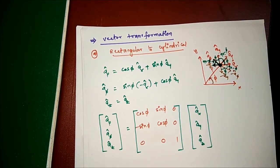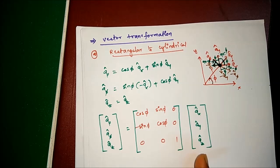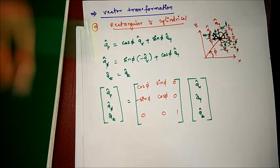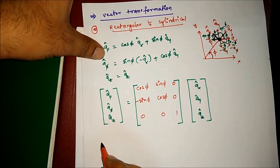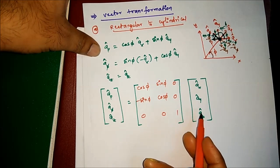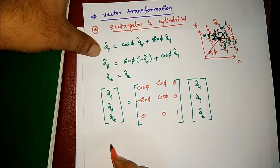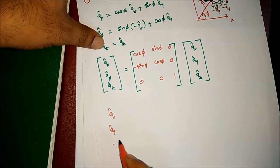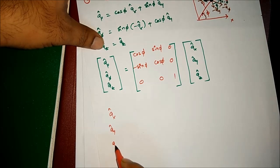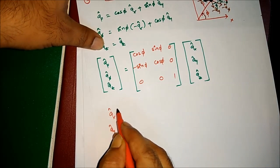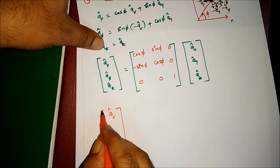The vice versa — cylindrical to rectangular — is obtained simply by taking the transpose of this matrix. This is a shortcut; if you derive it directly you will get the same thing. So I am writing it directly.